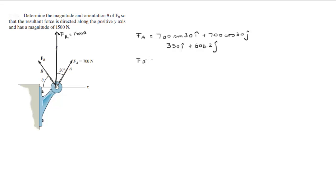F of B is equal to what we're looking for, let's say x i plus y in the j direction.